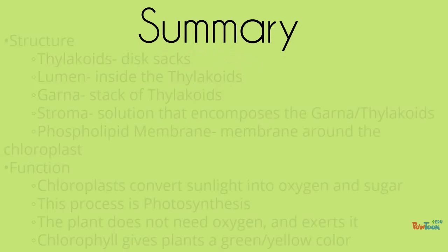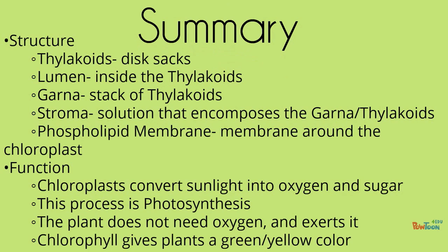In all, the structure includes thylakoids, which are the disc-shaped sacs; lumen, inside of the thylakoids; grana, which is a stack of thylakoids; stroma, which is the solution that encompasses all of it; and the phospholipid membrane. The functions of the chloroplast include converting sunlight into oxygen and sugar through photosynthesis, the plant gets rid of oxygen and that's how we get it, and chlorophyll gives plants a green and yellow color.